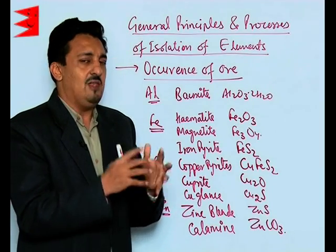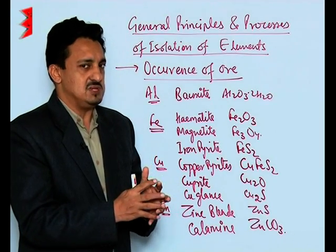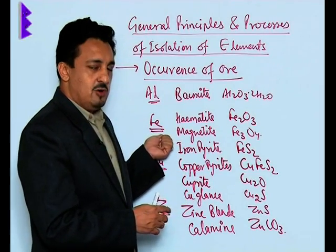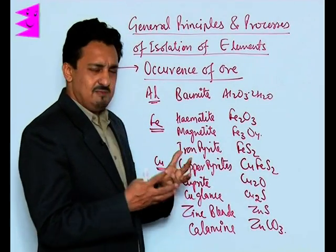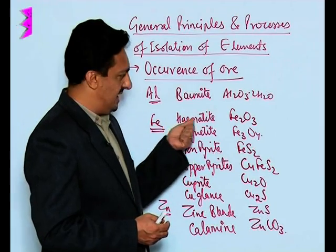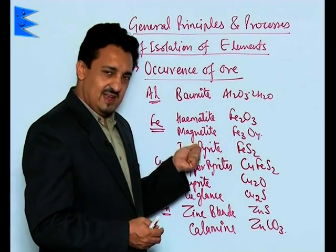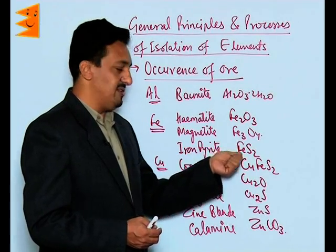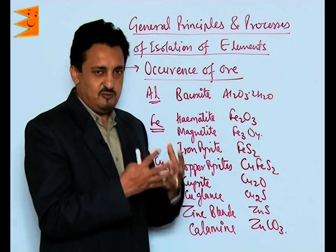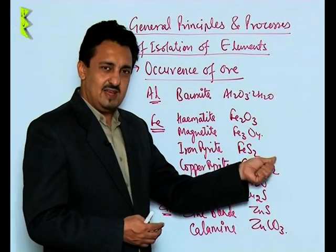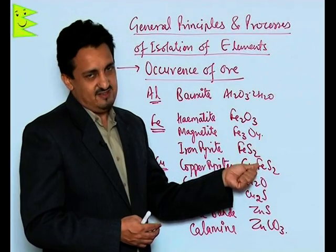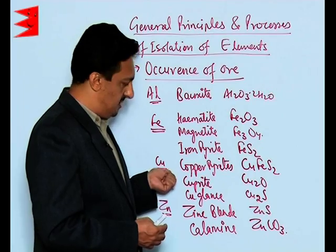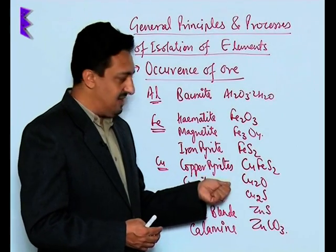We can also classify ores on the basis of their chemical composition and the elements to which they belong. For iron, the major ores are hematite (Fe₂O₃) and magnetite (Fe₃O₄), which are oxide ores, and iron pyrite (FeS₂), which is its sulphide ore.